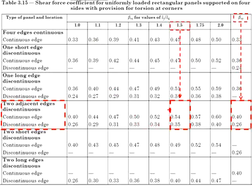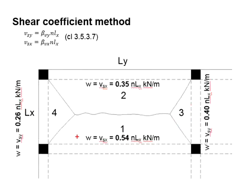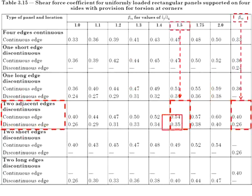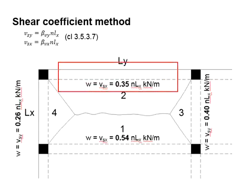Then, you need to decide which numbers apply to which sides. 0.54 refers to the continuous edge of the longer span, that means it's this span. 0.35 is for the discontinuous edge of the longer span, that means it is referring to this span.